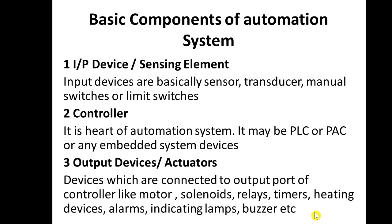These are the output devices — the ones that actually do the work. Input devices send data or signals to the controller, and the controller sends signals to the output devices. These are the three types of components in an automation system. Thank you for watching.